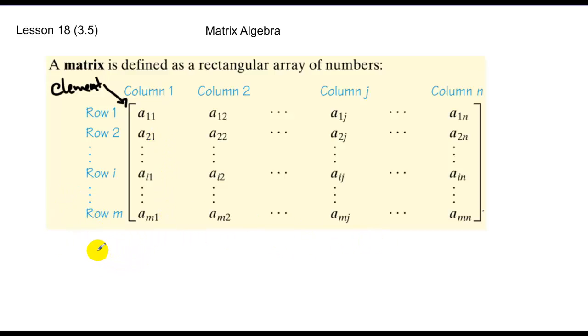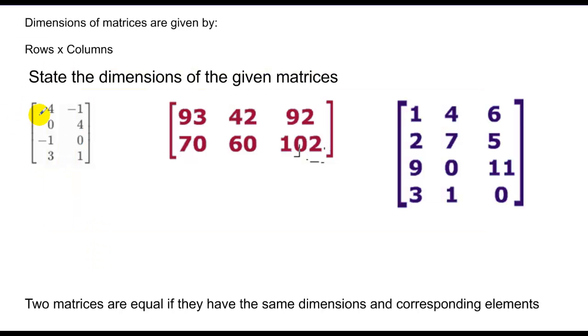We define matrices by their rows and columns. If I want to talk about a dimension, I name the rows first and the columns second. In this case, rows go across, I have four rows by two columns. This has two rows by three columns. This has four rows by three columns.